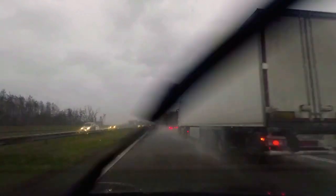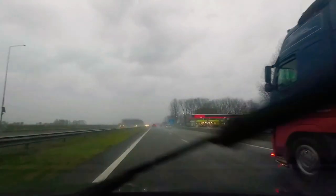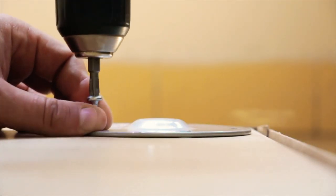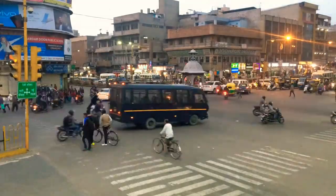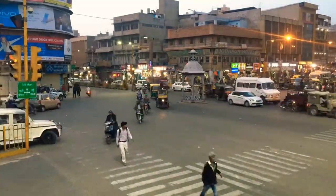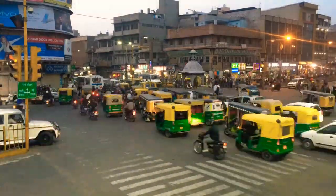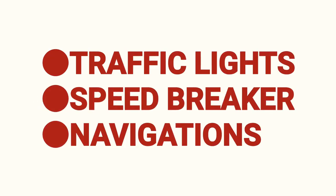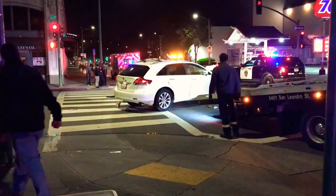Traffic lights can become faulty if there are severe weather conditions, such as high winds and rain, that damage circuits and cause them to malfunction. Sometimes a traffic light is improperly installed or not maintained properly. Without traffic lights, there will be a race between vehicles without road safety rules, resulting in a large number of accidents. With no traffic signals, no speed breakers, and no navigation, this leads to traffic jams, accidents, and even deaths.